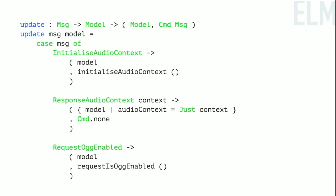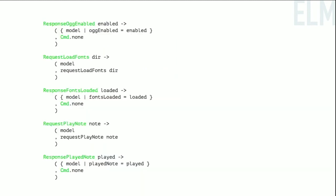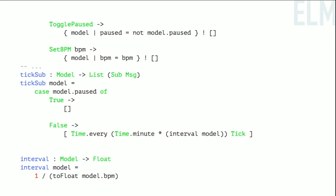The update function drives all this. In Elm it's encouraged to have these big flat update functions because in practice it's not problematic. I've never gone into this codebase and wondered what a part does — it's really straightforward. Initialize audio context sends a thing out a port saying 'please make an object for me in JavaScript.' Response audio context is them telling me 'cool, you have one, here it is.' Request OGG-enabled lets me know whether to use the OGG or MP3 sound font. Request load fonts tells them where the fonts are. And then request play note says 'play this note right now.'